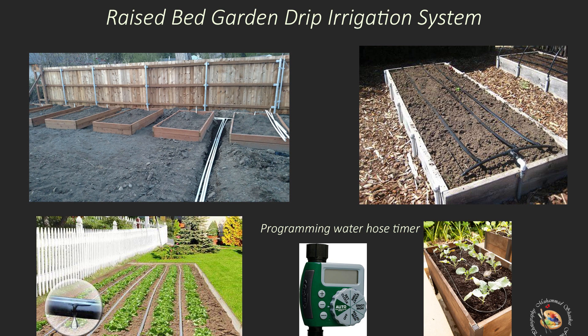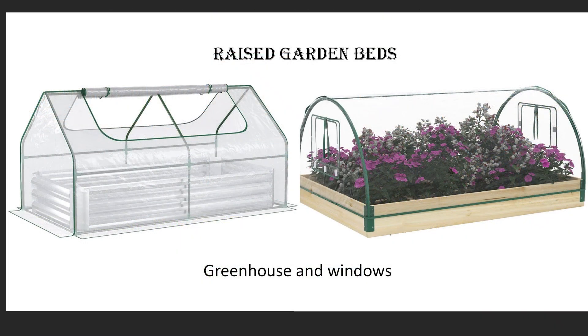Raised beds, also known as raised above-the-ground beds, offer several advantages for vegetable gardening. Key benefits include: improved drainage — raised beds are filled with well-draining soil mixtures, which prevents water from pooling around plant roots. Better soil quality — since you fill raised beds with a customized soil mix, you have better control over the soil quality and can add nutrients as needed.